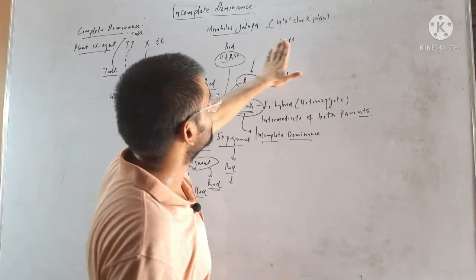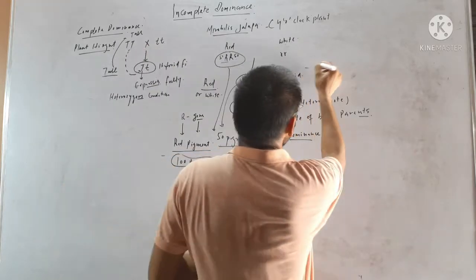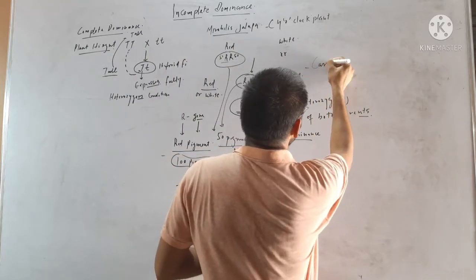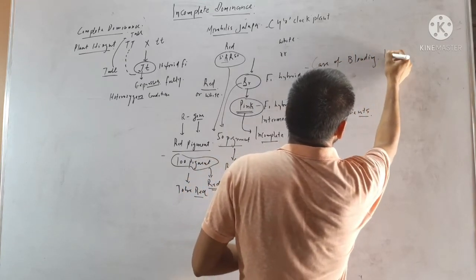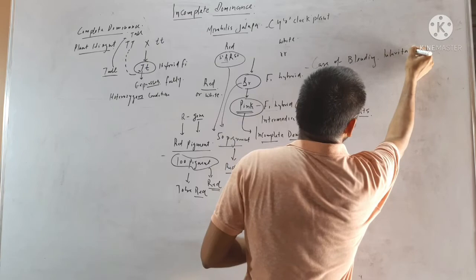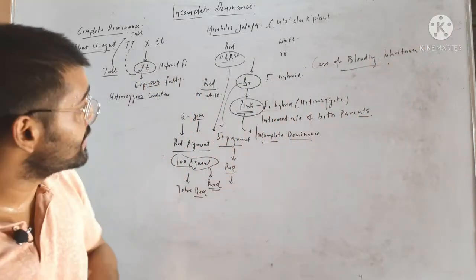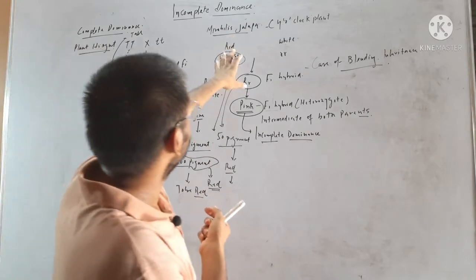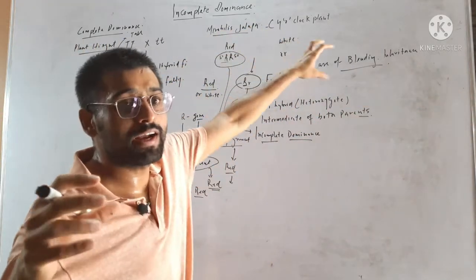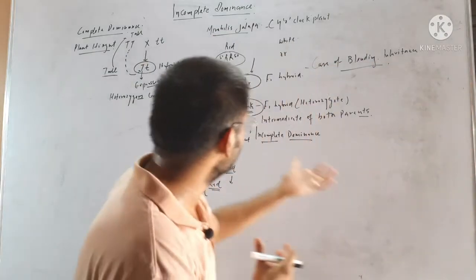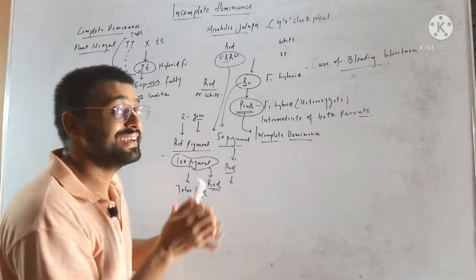When red is crossed with white, we get pink, so it looks like a case of blending inheritance. It seems that blending inheritance is occurring — that the factor for redness and the factor for whiteness dilute each other to form pink color.